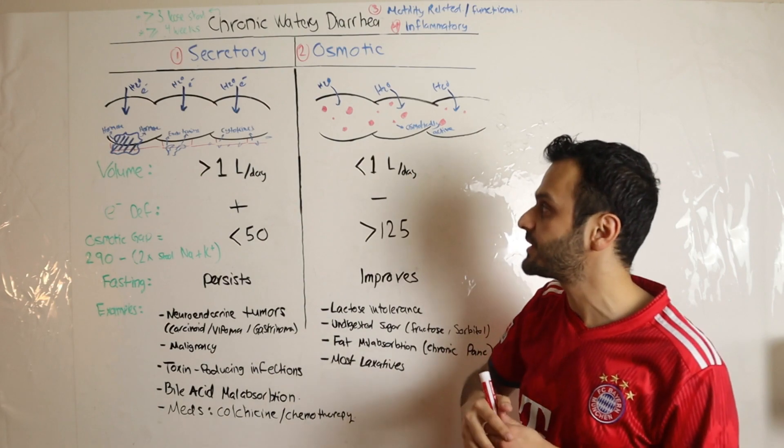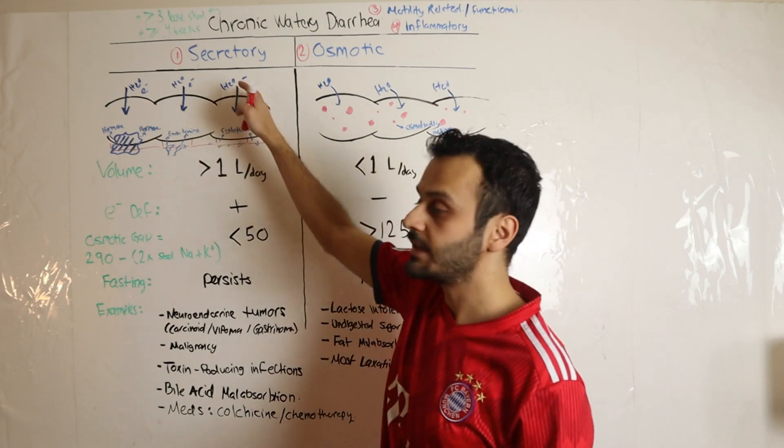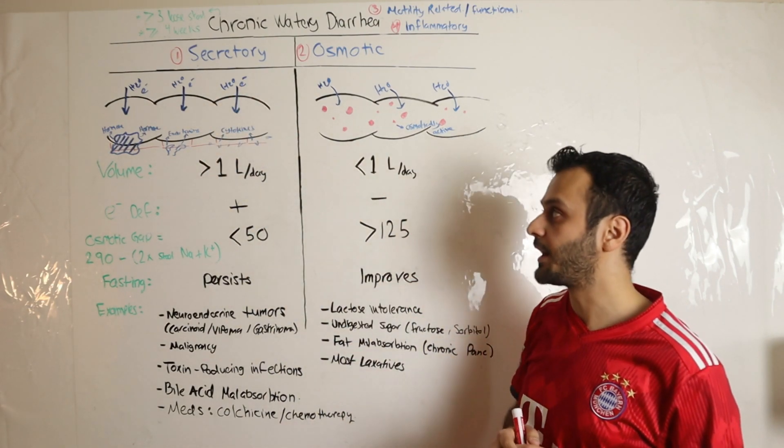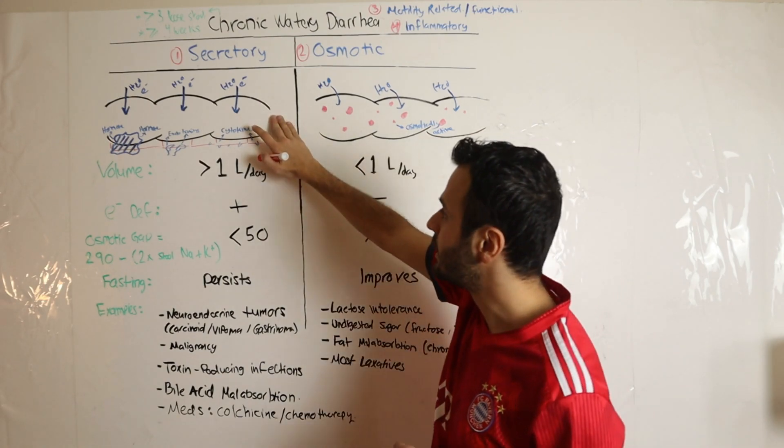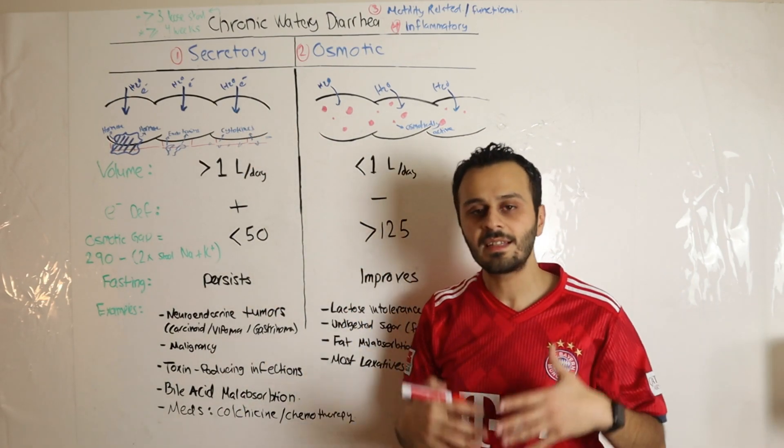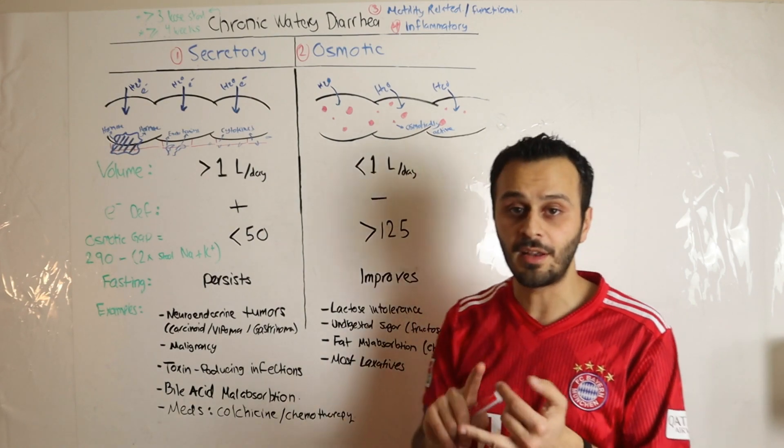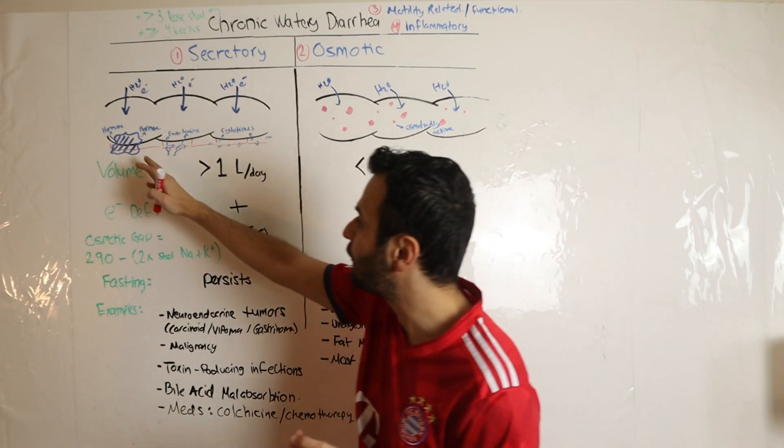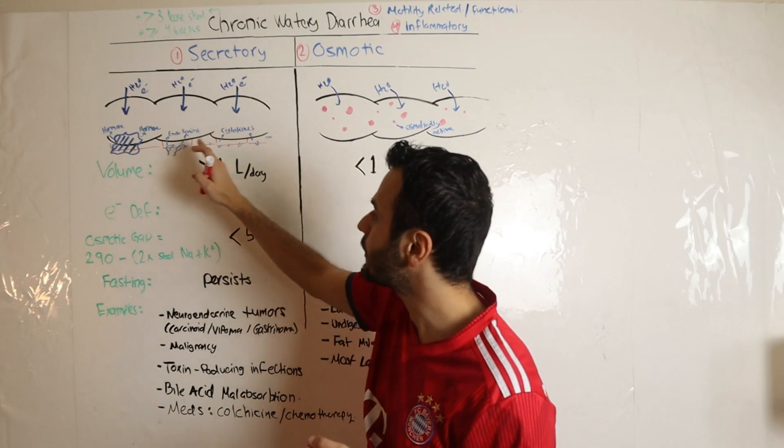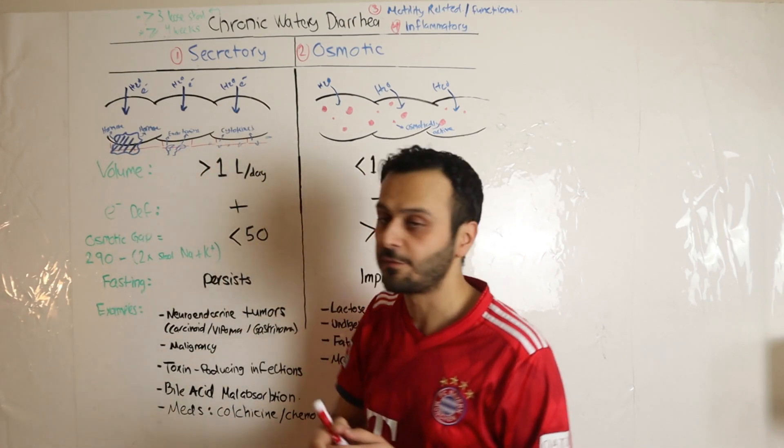So in secretory diarrhea, in short summary, you have this constant efflux of both water and electrolytes coming from one of these categories of pathology. There is a reason why I say constant – these patients have diarrhea day and night, ongoing.